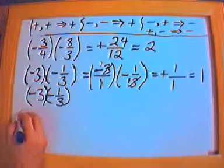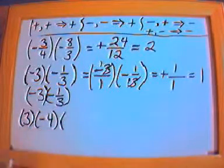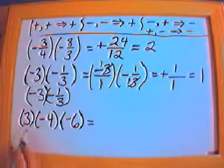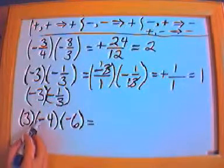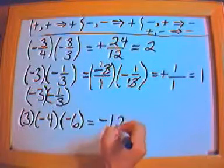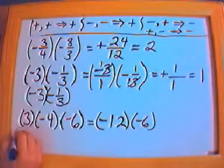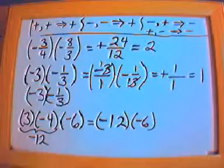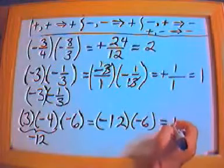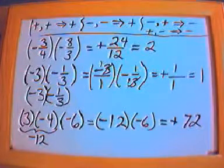Let's take three numbers: 3 times negative 4 times negative 6. We just go in order — work with the first two, then continue. Negative times positive is negative, so 3 times 4 is 12 giving us negative 12. Then negative 12 times negative 6: negative times negative is positive, and 12 times 6 is 72. So the answer is positive 72.